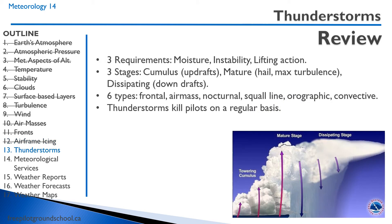Thunderstorms have three requirements: moisture, instability, and lifting action. There are three stages: the cumulus stage characterized by updrafts; the mature stage characterized by hail and maximum turbulence; and the dissipating stage characterized by downdrafts. There are six types of thunderstorms: frontal, air mass, nocturnal, squall line, orographic, and convective — though convective, orographic, and nocturnal could all be considered air mass thunderstorms. Unfortunately, thunderstorms kill pilots on a regular basis.